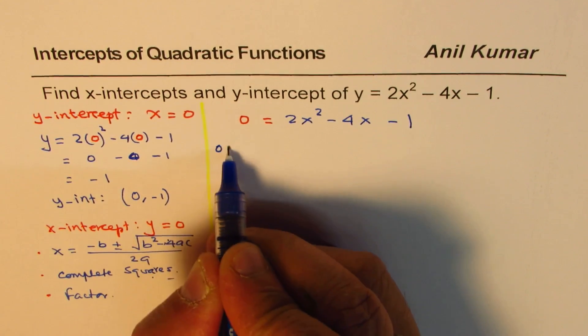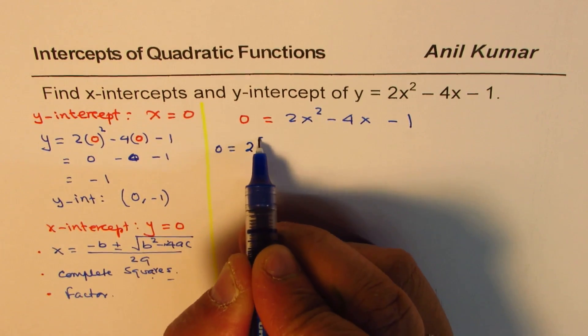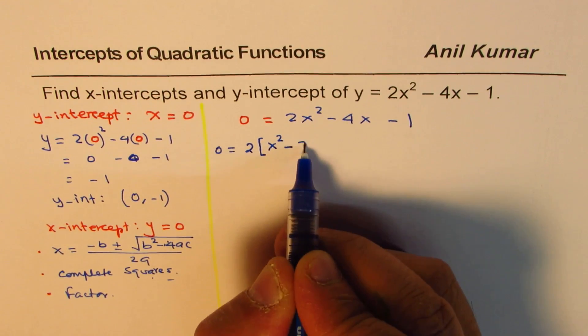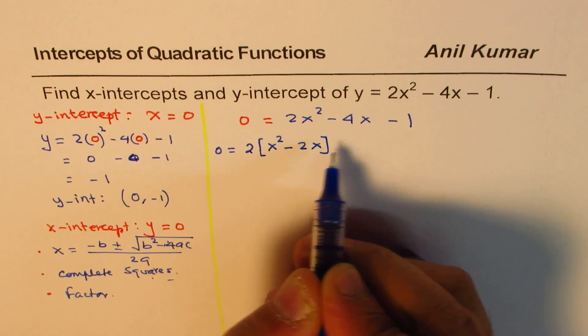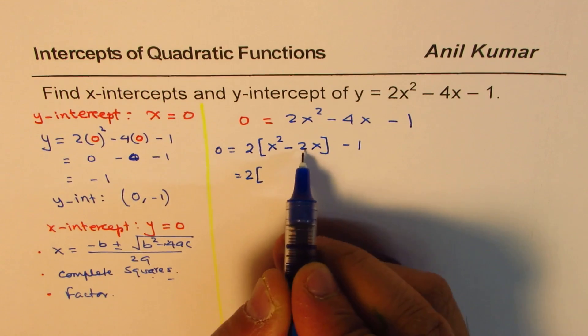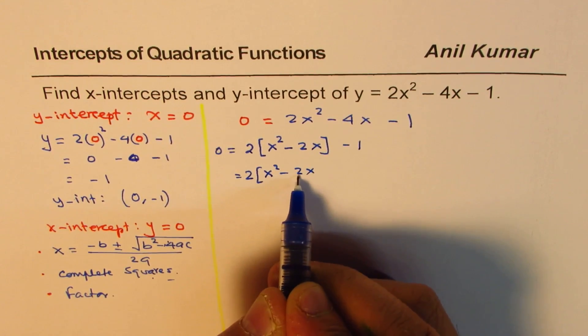So we'll write this as 0 equals 2. To complete the squares, I'll take 2 outside, factor it out. So we have x squared minus, divide by 2 gives us 2x. And then we'll keep this 1 separate. Now the next step is, take half of this number and square it.